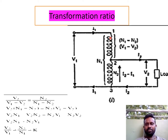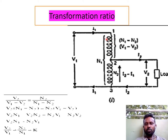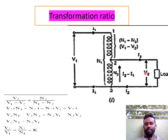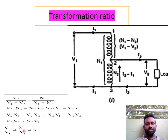What is the transformer ratio? If I1 is the current flowing through the winding and V1 is the applied voltage, this is basically a step-down transformer. The number of turns in the series section is N1 minus N2, and the voltage across it is V1 minus V2. According to the transformer ratio: V2 / (V1 − V2) = N2 / (N1 − N2). Cross-multiplying and simplifying gives: K = V2/V1 = N2/N1 = I1/I2. This is the transformer ratio.